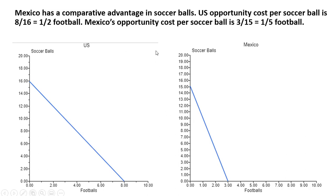For Mexico, the opportunity cost of producing a soccer ball is the horizontal intercept divided by the vertical intercept, so 3 divided by 15, or one-fifth of a football. It's actually cheaper in Mexico to produce one more soccer ball than it is in the US. Mexico only sacrifices one-fifth of a football for each additional soccer ball produced, while in the United States they're sacrificing half a football for each soccer ball produced.